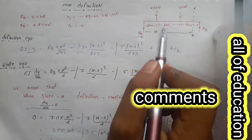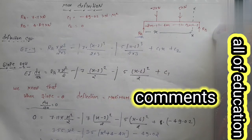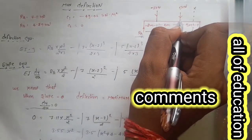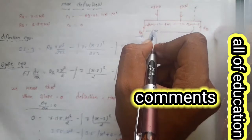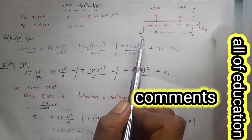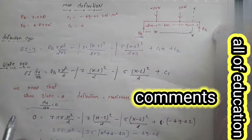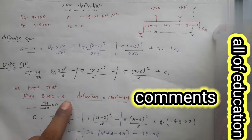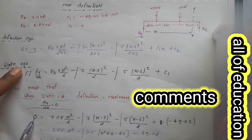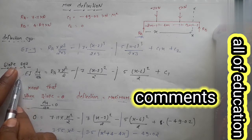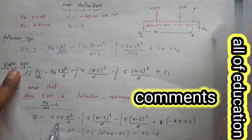A point से कितनी दूरी पर maximum deflection बनेगा यह हमें पता नहीं है। इतना जरूर पता है कि दोनों forces के बीच में बनेगा। Confirm नहीं है कि कितनी दूरी पर बनेगा, इसलिए हम यह बात लागू करेंगे कि जहां slope 0 होगा वहां deflection maximum होगा। तो slope equation को 0 रखेंगे।